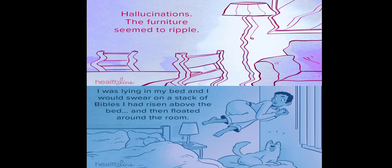For example, hallucination: 'The furniture seemed to ripple. I was lying in my bed and I would swear I was rising above the bed and then floated around the room.' These are all examples of ADR — unplanned, harmful, and toxic — but they will not create any hurdle in achieving the treatment or the prescribed outcomes.